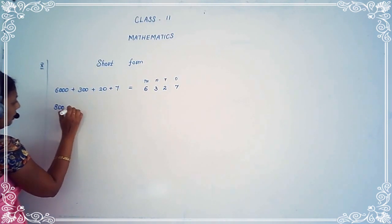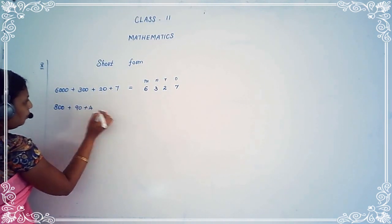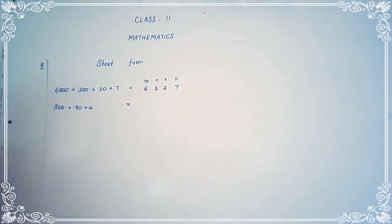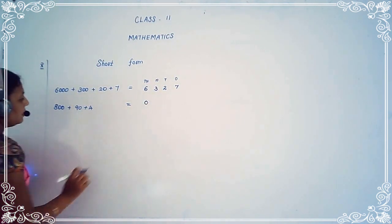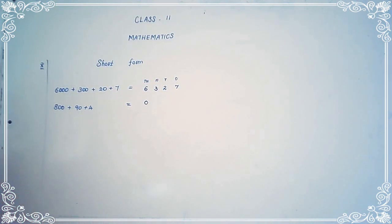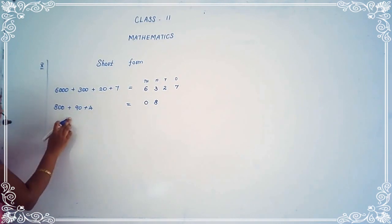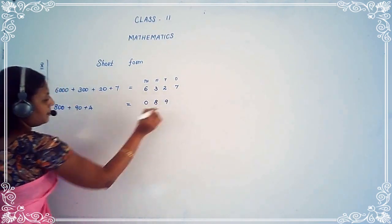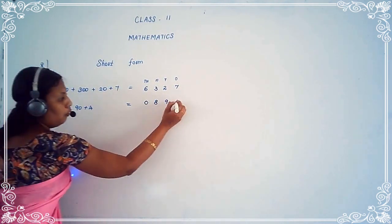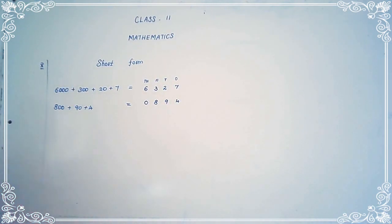Another example: eight hundred plus ninety plus four. First, see the thousands place — there is no thousands value, so we use zero in the thousands place. How many hundreds is there? Eight hundred. Write eight in the hundreds place. Then see the tens place — ninety means nine tens. How many ones? Four ones.